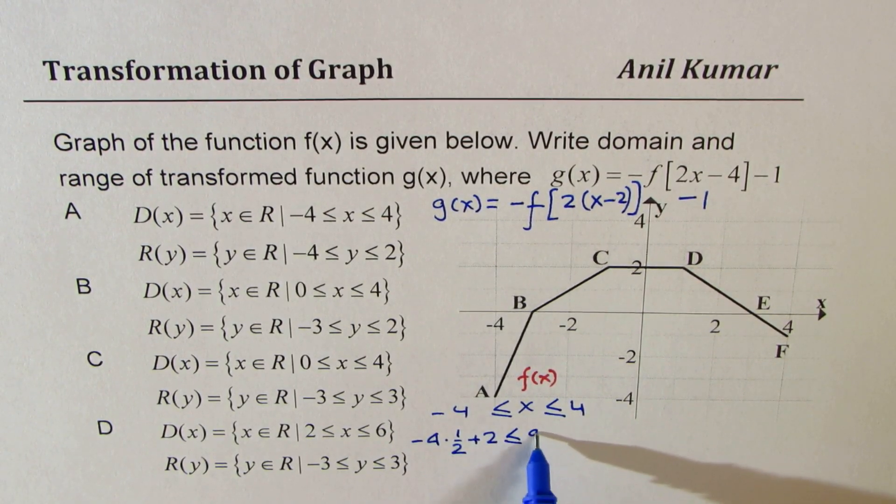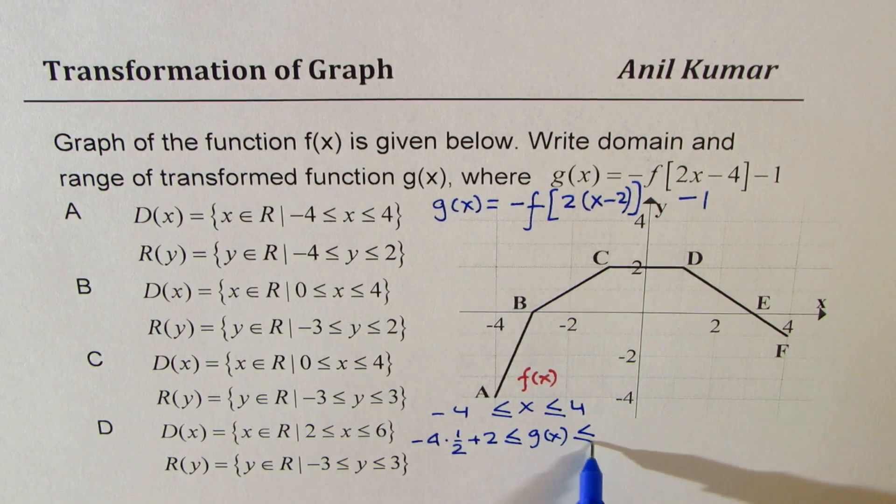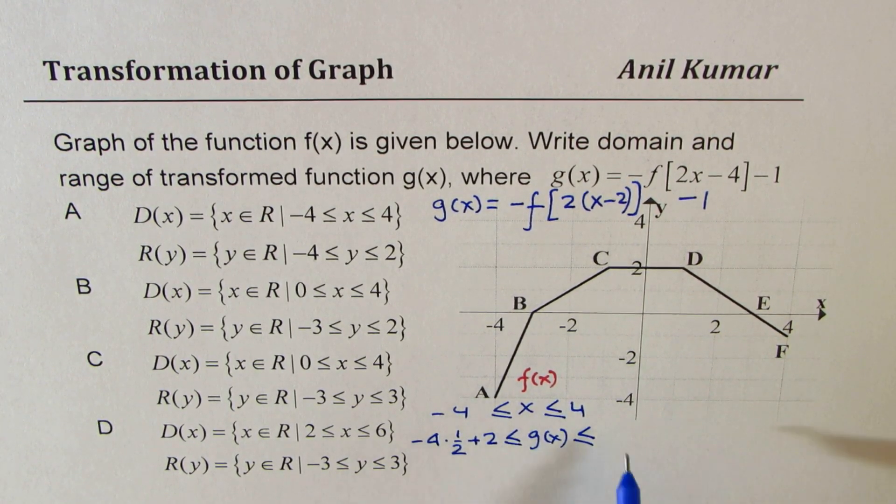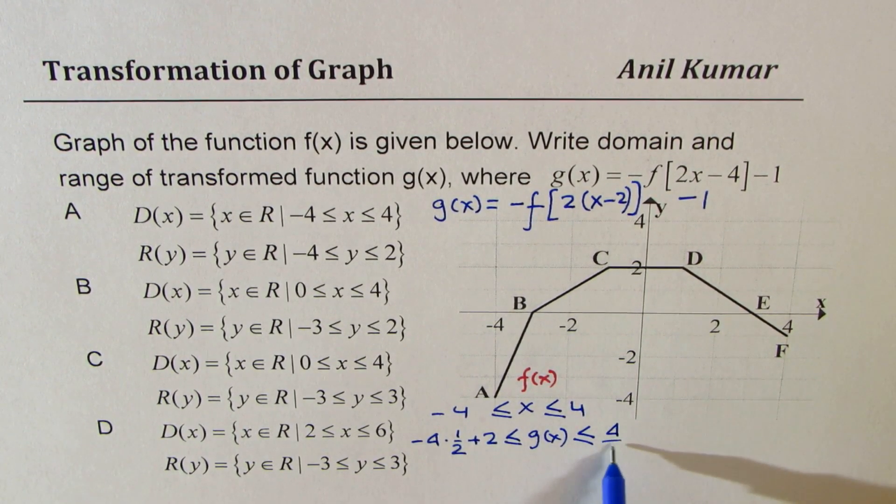This is for g of x domain. Similarly, on 4, we will do half of 4 and then add 2. So that becomes the domain.